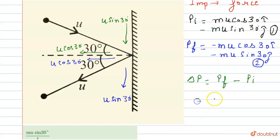Final momentum minus initial momentum is equals to minus 2 m u cos 30 degree.